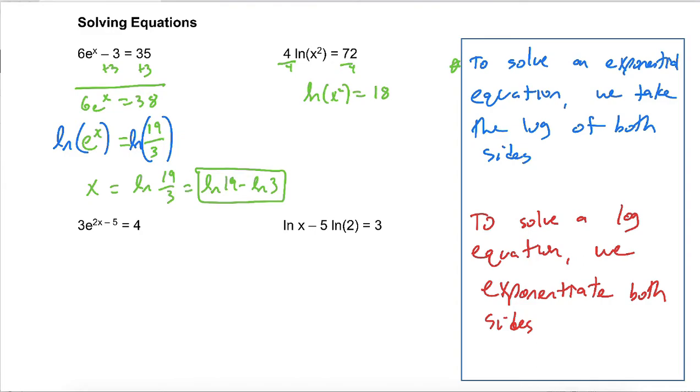And we'll use our guiding principle from down here. To solve a log equation, we exponentiate both sides. And again, since we're dealing with the base e, we can exponentiate with the base e. And so what we end up with, e to the ln, that cancels out. So we have x squared equals e to the 18.